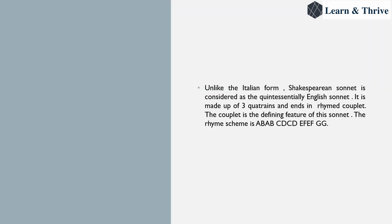Unlike the Italian form, Shakespeare started writing his sonnets a little differently. His sonnet also consisted of 14 lines, because 14 lines are compulsory no matter who is writing it. But his rhyming scheme was a little different from the Italian sonnet. He had three quatrains — sets of four lines — rhyming a b a b, c d c d, e f e f.